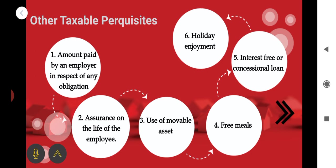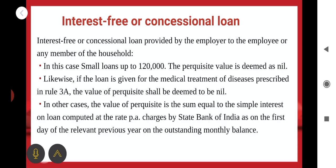The next one: interest-free or occasional loans provided by the employer to the employee or any other member of the household. For small loans up to rupees 1,20,000, the perquisite value is nil. Likewise, if the loan is given for medical treatment of a disease prescribed in Rule 3 — some specific diseases are prescribed in Rule 3 — the value of perquisite shall be deemed to be nil. In other cases, the value of perquisite is the sum equal to the simple interest on the loan computed at the rate per annum charged by the SBI as on the first day of the relevant previous year on the outstanding monthly balance.